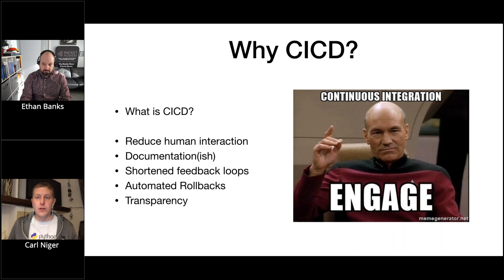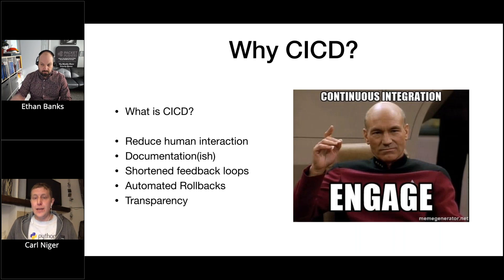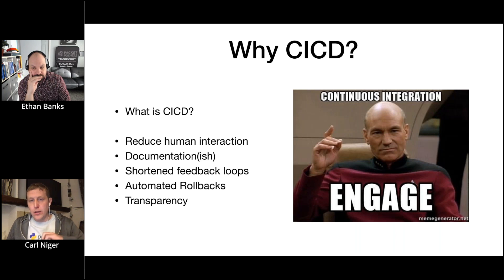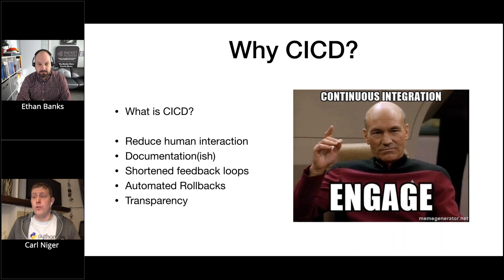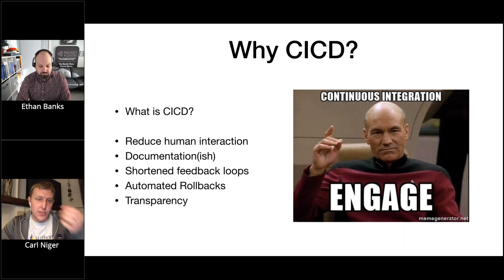At the end of the CI process, you'd have an artifact that can be delivered somewhere — maybe compiled code or a new Docker image. Then you move to CD: Continuous Delivery takes that artifact and deploys it somewhere useful, like putting a binary in an S3 bucket or Artifactory. Continuous Deployment actually goes and deploys it — copying a WAR file to a server and restarting Apache, or using Kubernetes to roll out new containers based on the new container image.